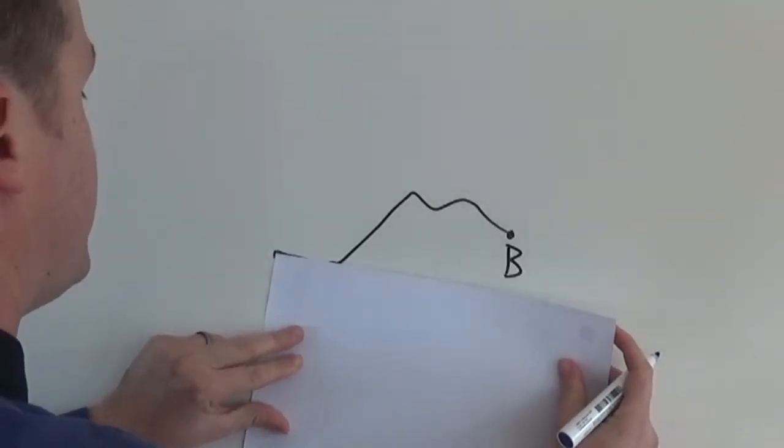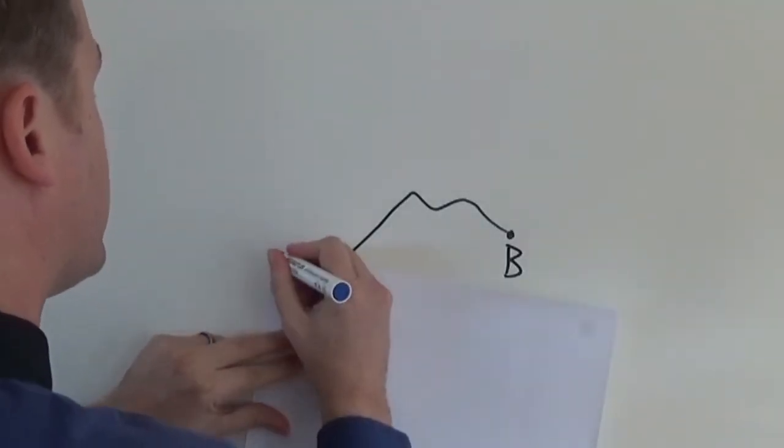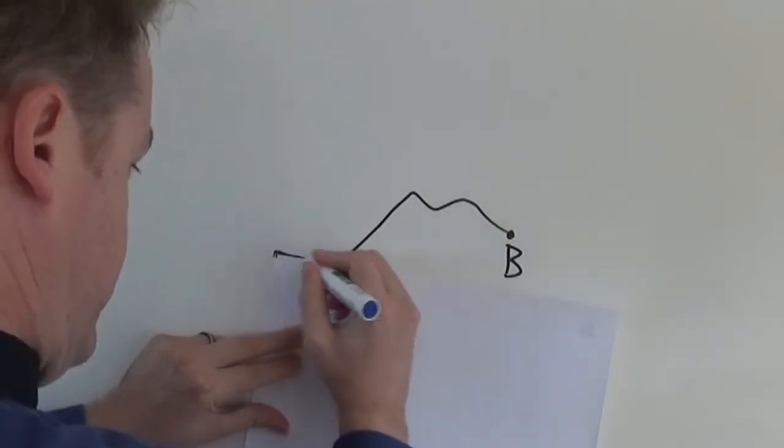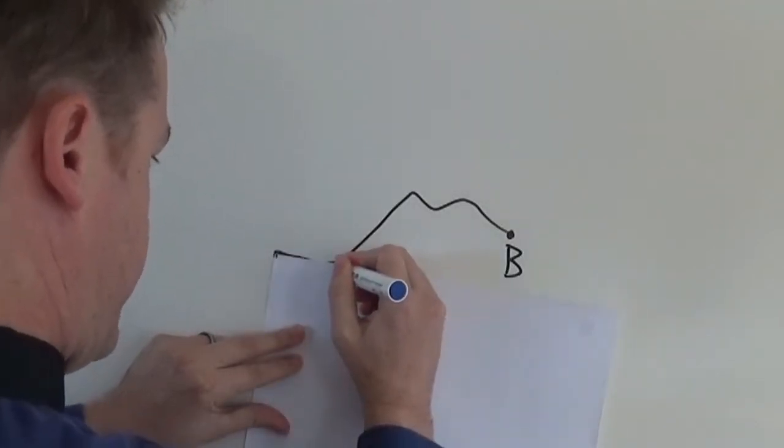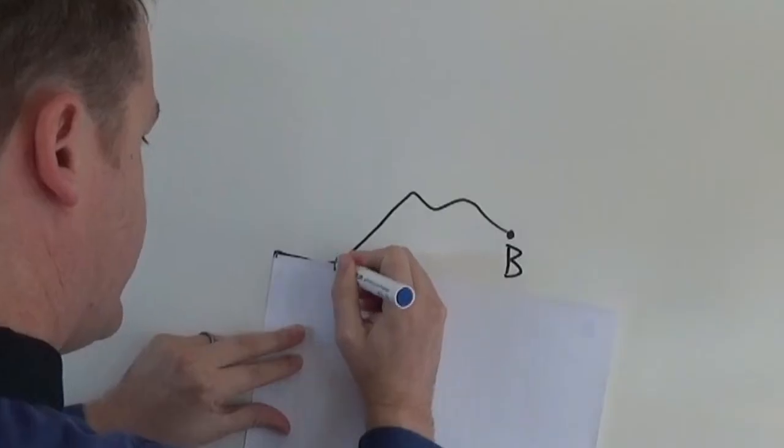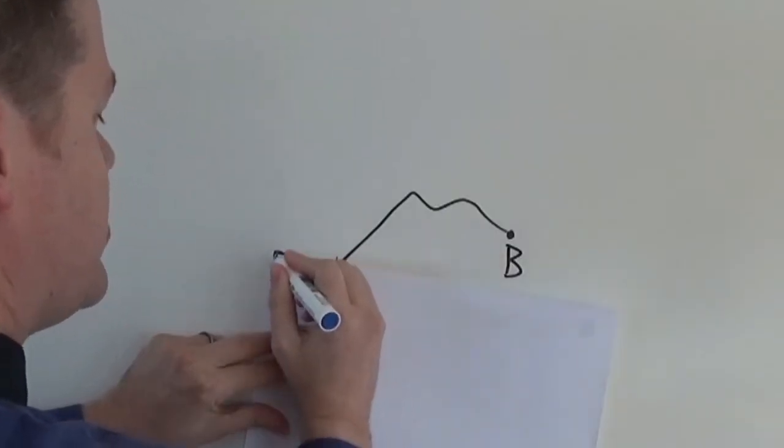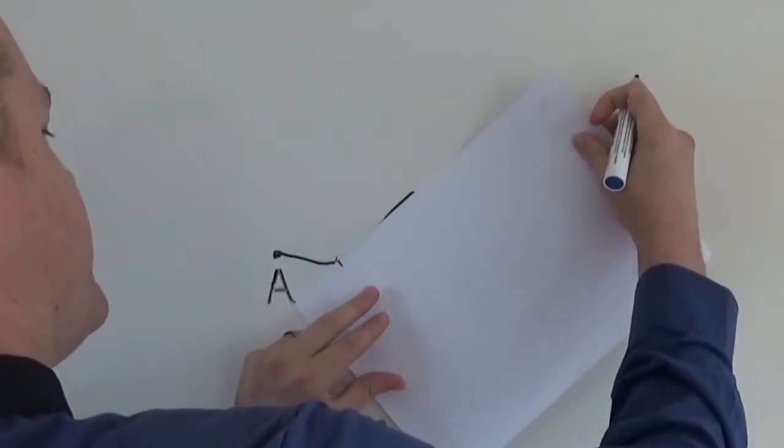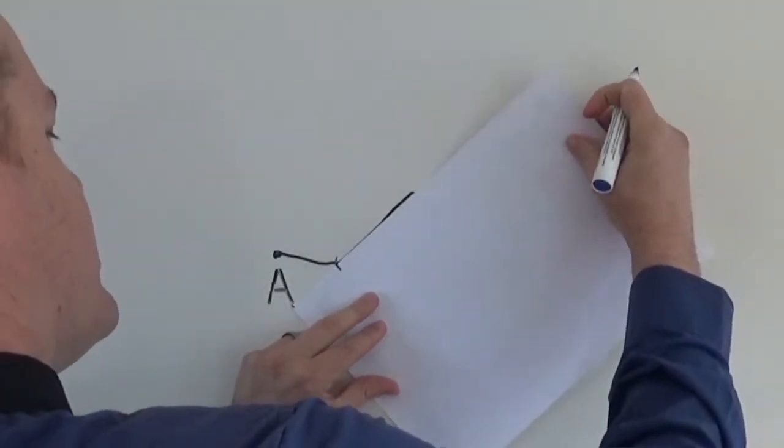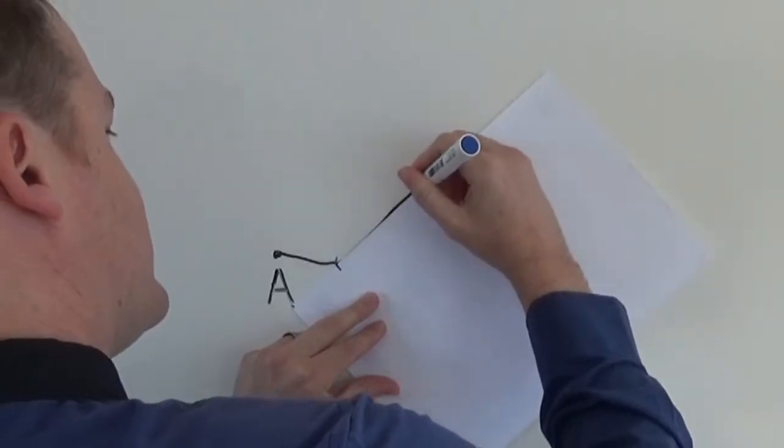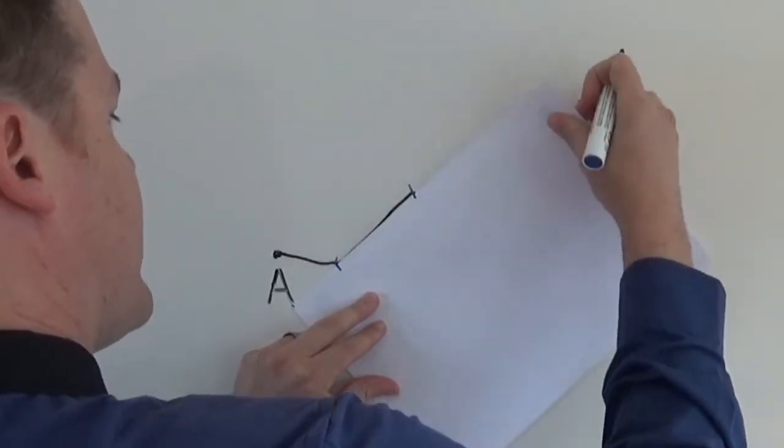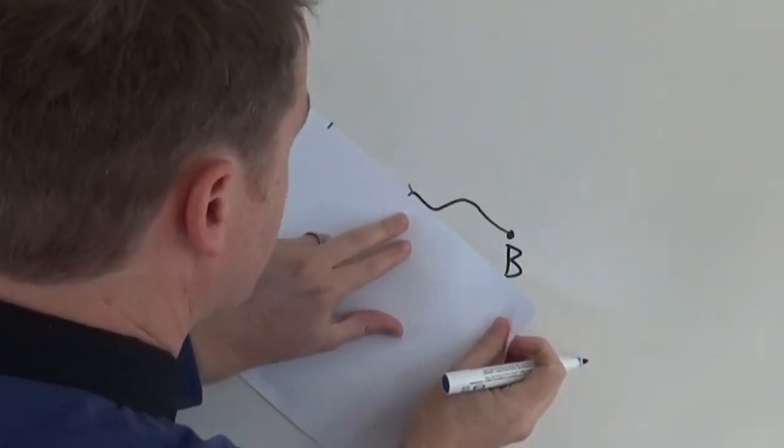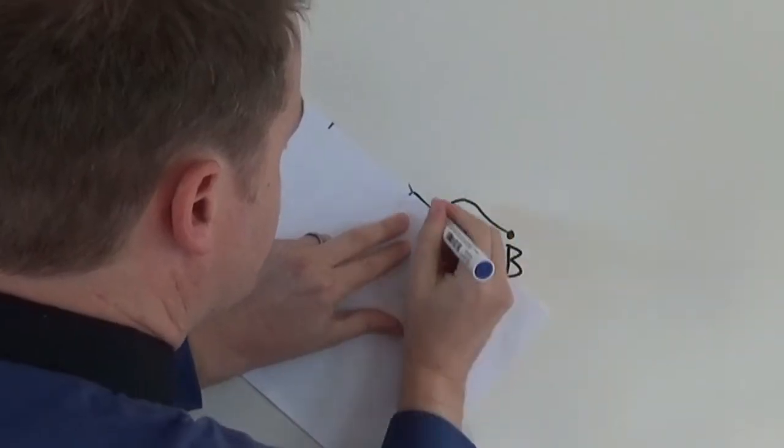We will start at point A, make a mark, and then we will go to this place over here. The line here is more or less straight so it's possible to measure the distance the way I'm doing it here. Then we will simply move on from there. There's another straight section, make another mark and we will do the same.